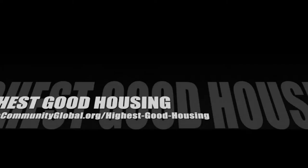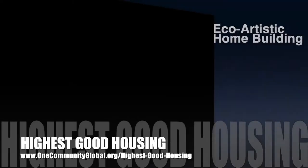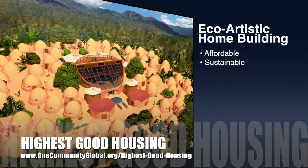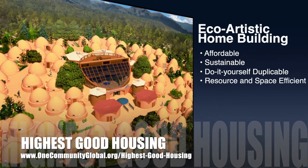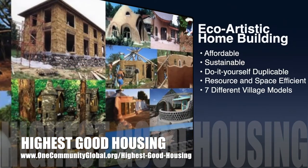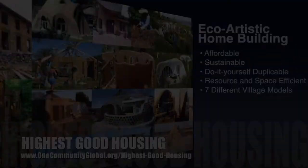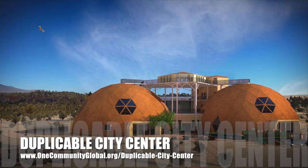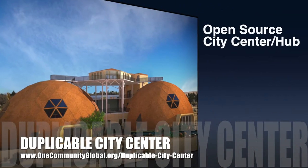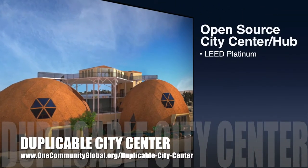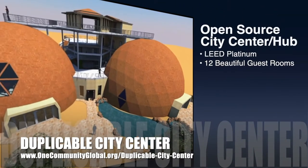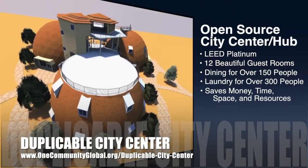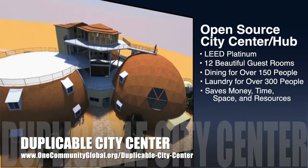The One Community approach to highest good housing is eco-artistic home building that is affordable, sustainable, do-it-yourself duplicable, resource and space efficient, and consists of seven different sustainably constructed village models. One Community is also creating an open-source duplicable city center designed to be LEED Platinum certified, provide 12 guest rooms, dining for over 150 people, and laundry and recreation space for over 300 people — all while saving money, time, space, and resources.